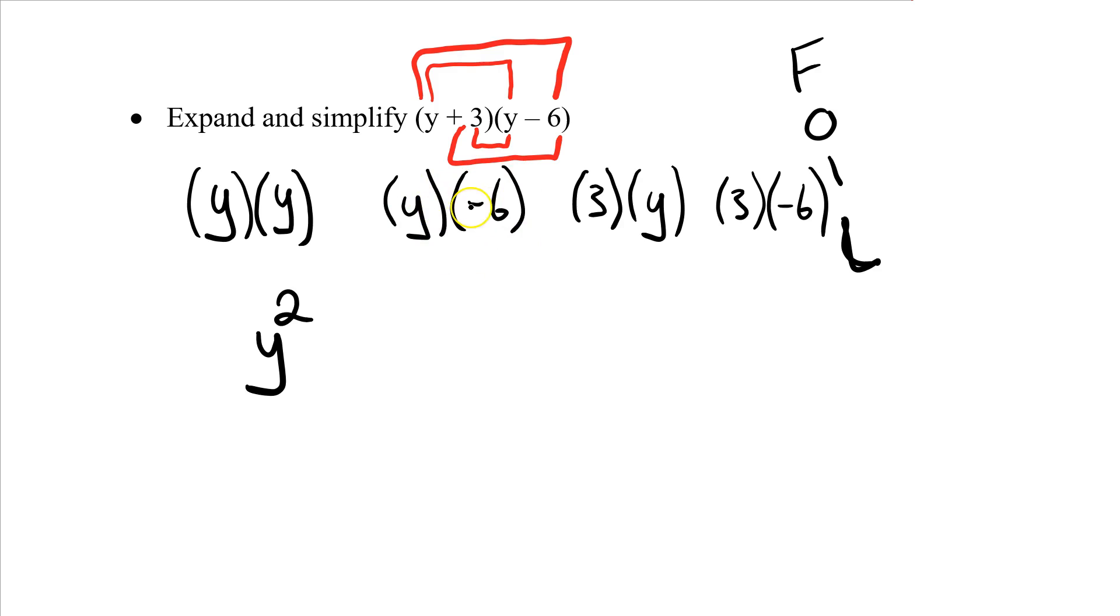The I stands for inside, those are my inside terms. So I've got 3 times y. And then my last - the last term in the first binomial and the last term in the second binomial. So I've got 3 and negative 6. These are the terms I'm going to be combining. Let's start combining them. y times y, there's two y's, so I write down y squared. y times negative 6, a letter and a number, I can't really do much except write them beside each other. I'll write the number down first, so it's negative 6y. 3 and y, again number and a letter, I'm going to write them beside each other: positive 3y. And then 3 times negative 6 gives me negative 18.